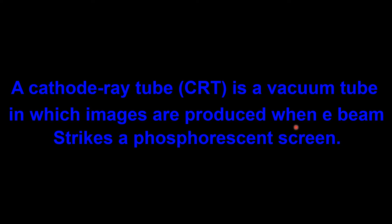A cathode ray tube is a vacuum tube in which images are produced when an electron beam strikes a phosphorescent screen. In a cathode ray tube, there are electron beams which are produced inside the tube. These electron beams fall on the phosphorescent screen. Phosphorescent screens are screens which glow when electrically charged particles or radiation fall on them. The electron beam in the cathode ray tube falls on the phosphorescent screen, and due to this the phosphorescent screen glows and produces an image.